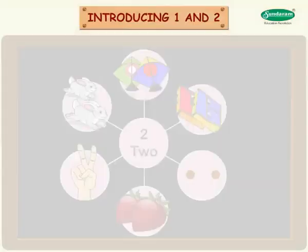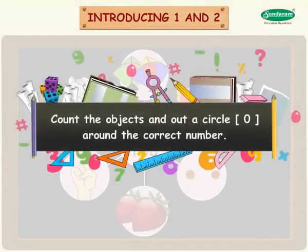Count the objects and draw a circle O around the correct number.